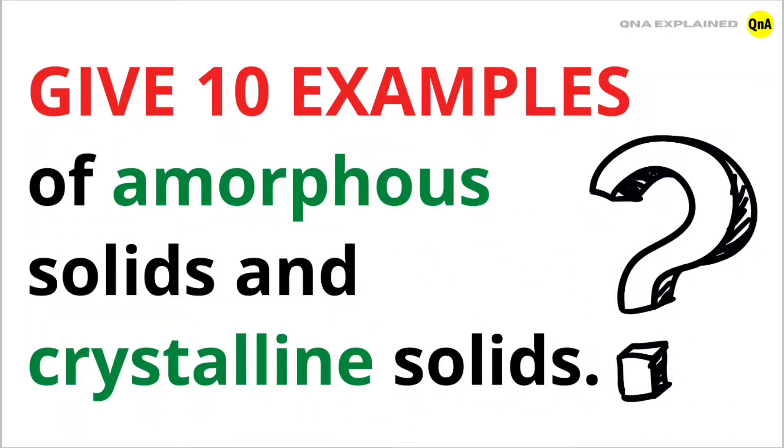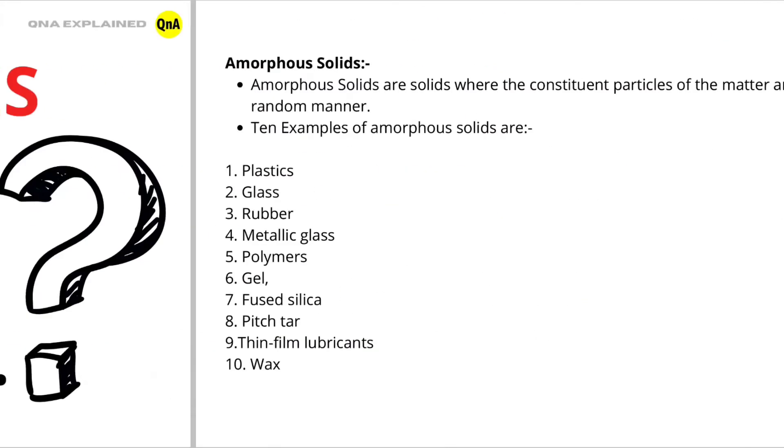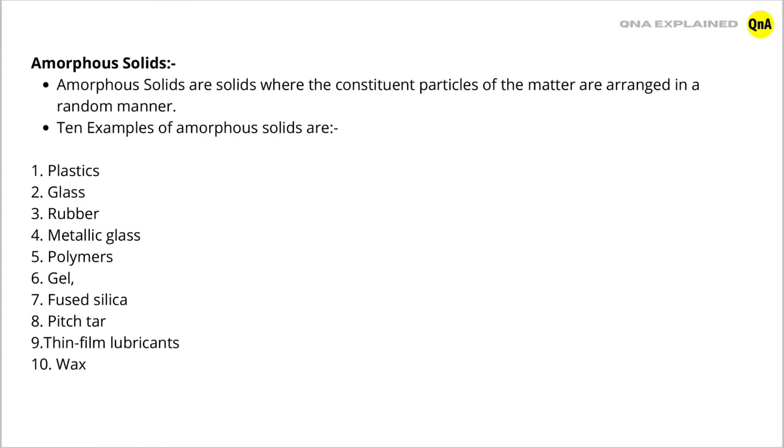Give 10 examples of amorphous solids and crystalline solids. Amorphous solids. Amorphous solids are solids where the constituent particles of the matter are arranged in a random manner. 10 examples of